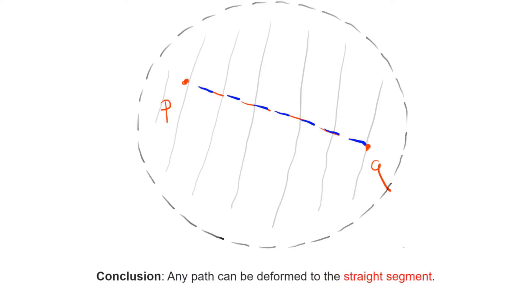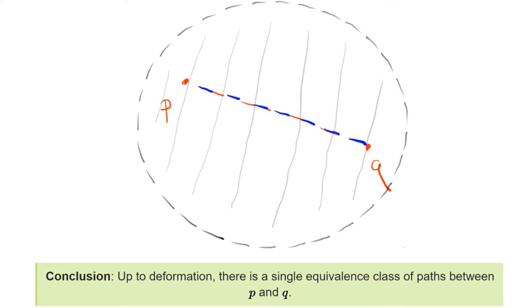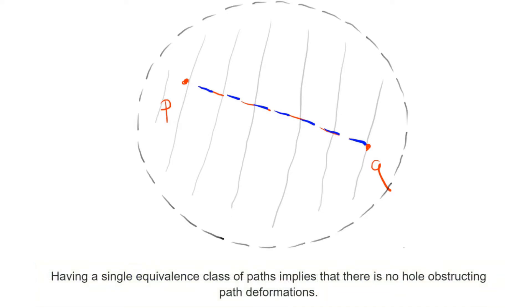Therefore, since any path can be deformed to the straight segment, any two paths can be deformed to each other. We conclude that there's a single equivalence class of paths up to deformation. You should think of this as saying that since there's no hole in D, we cannot tie paths to it in different ways.